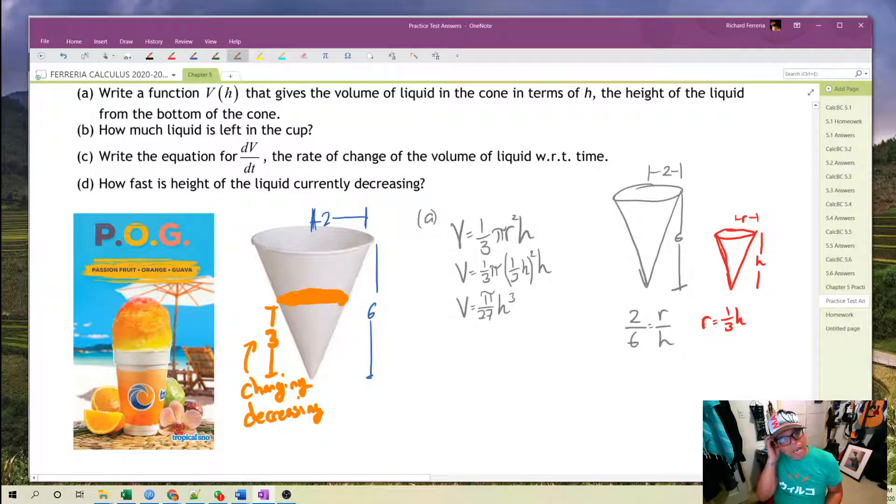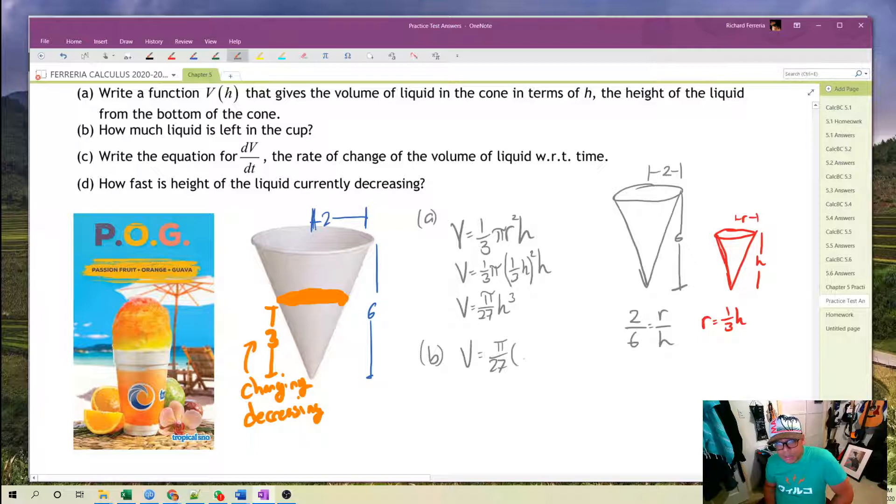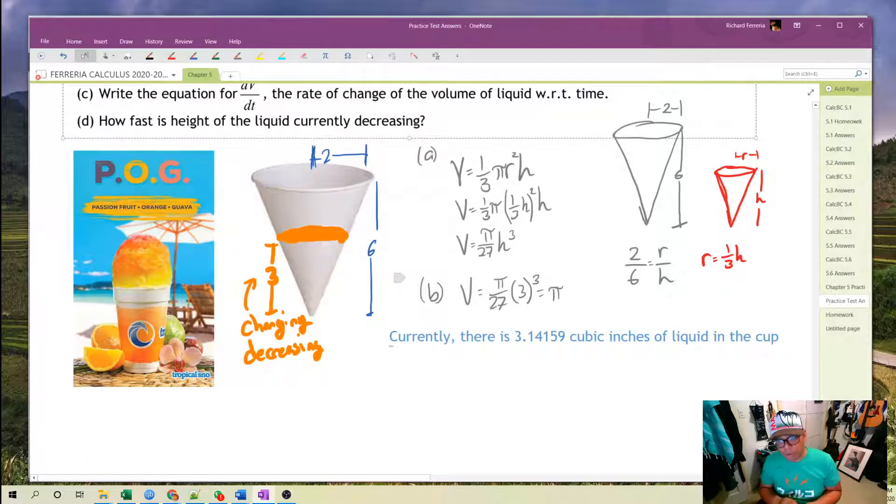Part b, how much liquid is currently in the cup? Well, currently the height is 3 inches. So b, pi over 27, use those 3 inches and cube them, that gives me 3.14 cubic inches here. Let's write a summary statement for that. So currently there is 3.14159 cubic inches of liquid in the cup. That's it for part b.